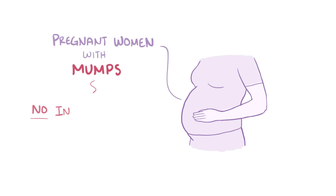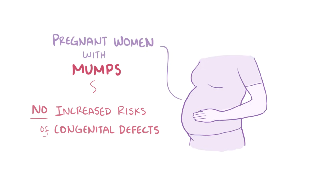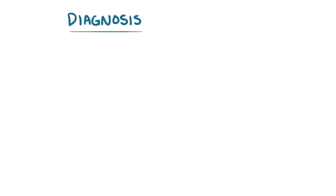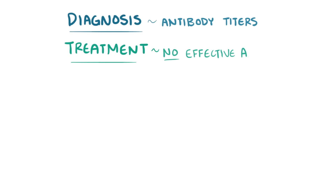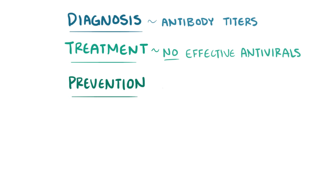As a final note, pregnant women with mumps are not at an increased risk of having a baby with congenital defects. Diagnosis is done by looking at antibody titers, though for treatment there aren't any effective antivirals for mumps. For prevention, individuals with mumps, particularly young children, are usually kept isolated for 5 days after the onset of symptoms to prevent it from spreading.